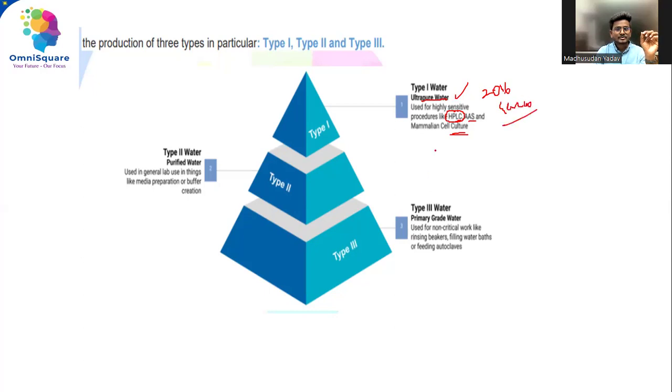The question was like this: What grade of water is used in high-performance liquid chromatography? Your options are grade 1, grade 2, grade 3, grade 4. Your answer is grade 1 water.